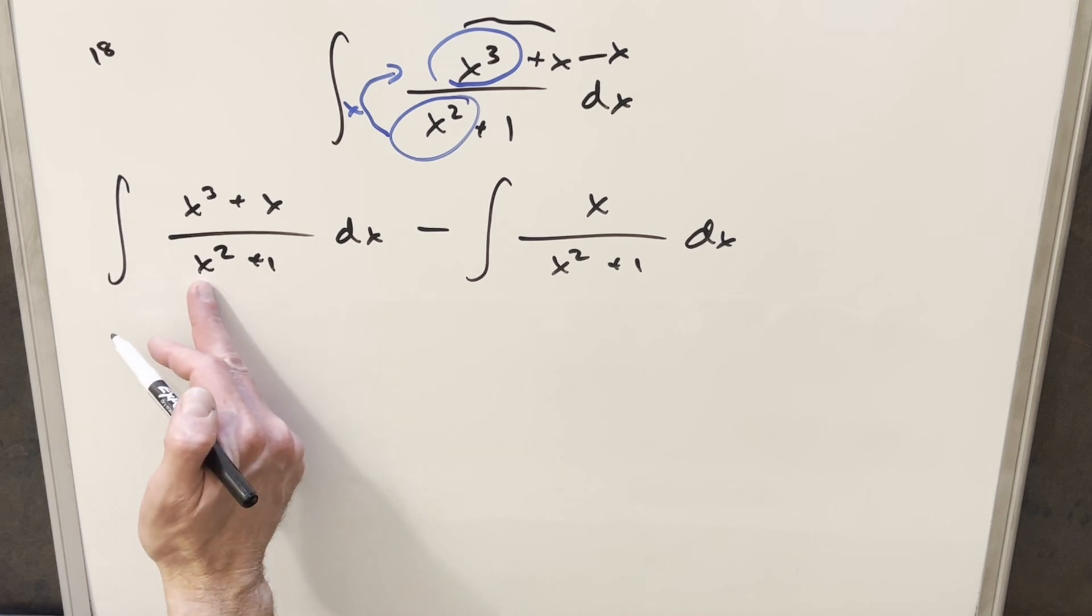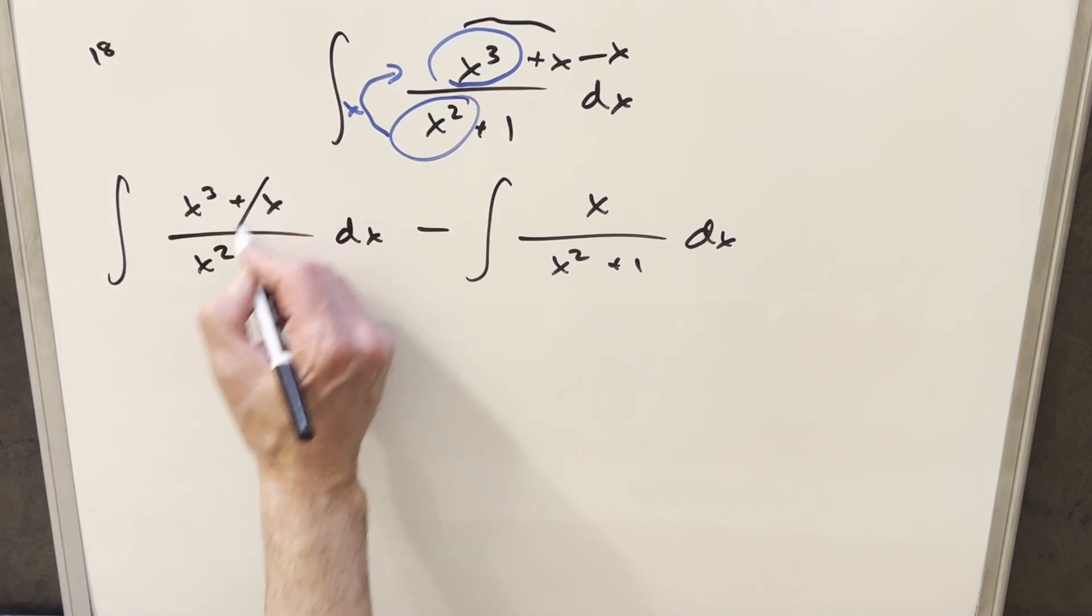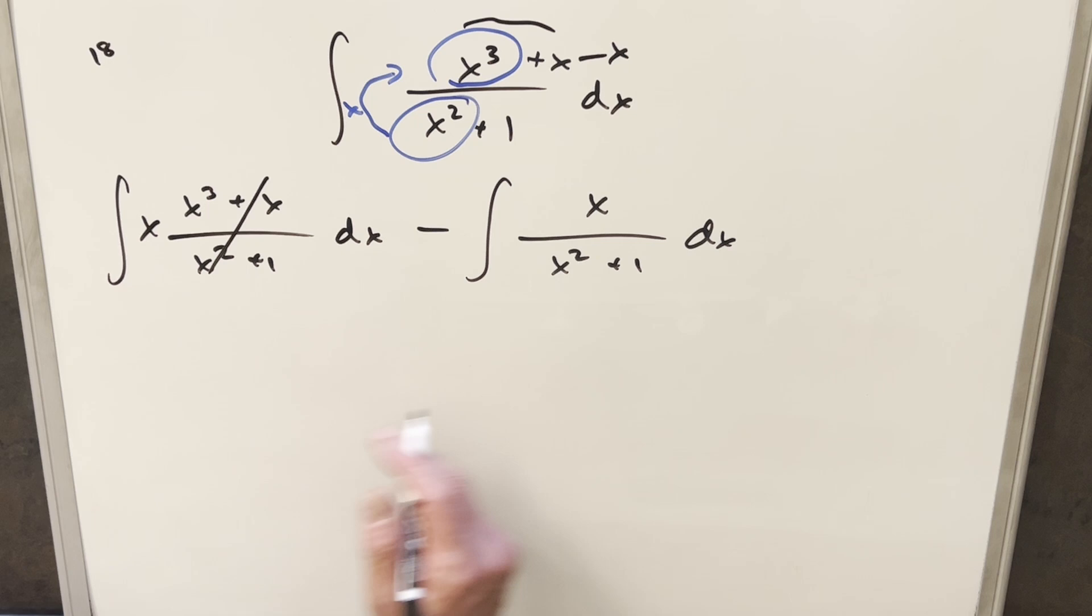But now again, for this one, we divide x squared plus 1 into x cubed plus x. This whole thing becomes x, so that's just going to be power rule. And this one's going to be pretty easy as well.